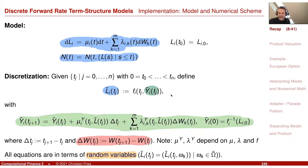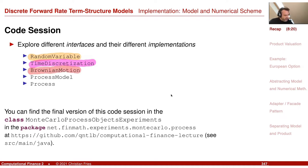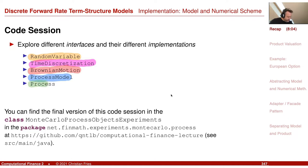We defined an interface for random variables — what can be done with random variables. We also defined a time discretization for our scheme. The time discretization is also the time discretization for the Brownian motion. The model — the blue part in the previous slide — was provided by an interface called process model, and the numerical scheme providing the discretized quantities was called process.